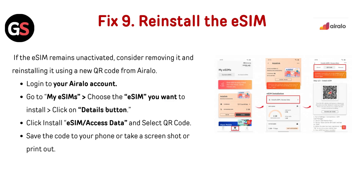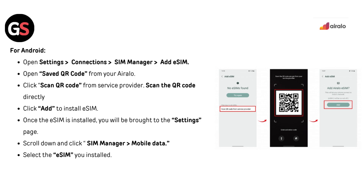Reinstall the eSIM. If the eSIM remains inactive, consider removing it and reinstalling it using a new QR code from AirLo. Log in to your AirLo account, go to My eSIMs, choose the eSIM you want to install, then click Details. Click Install eSIM or Access Data and select QR code. Save the code to your phone or take a screenshot. For Android, open Settings, go to Connections, SIM Manager, then Add eSIM. Open the saved QR code, click Scan QR Code from the service provider, scan it, and click Add to install.